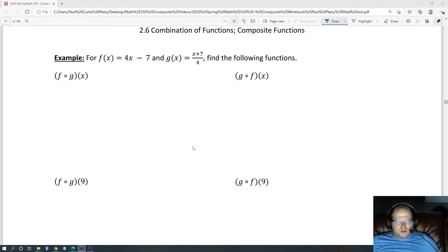2.6 Combination of Functions: Composite Functions. For f(x) = 4x - 7 and g(x) = (x + 7)/4, find the following functions. f composite g of x.